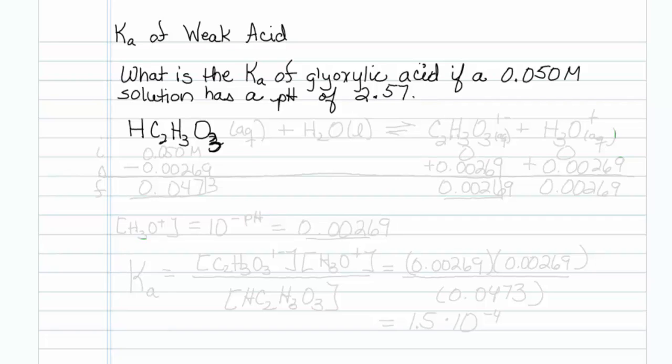This is how to get the Ka of a weak acid given the pH. What is the Ka of glyoxic acid if a 0.05 molar solution has a pH of 2.57?